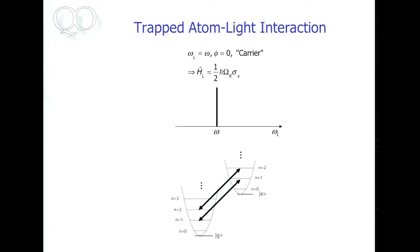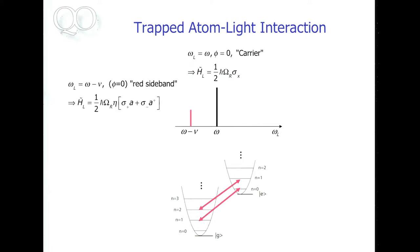When we tune to the red sideband, our electromagnetic radiation is red-detuned with respect to the atomic resonance. Under this condition, applying the rotating wave approximation, we find a Hamiltonian where internal dynamics and external dynamics are coupled. We create an excitation in the atom while destroying an excitation in the harmonic oscillator, and vice versa.